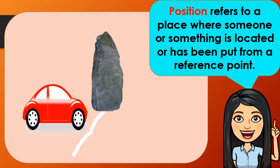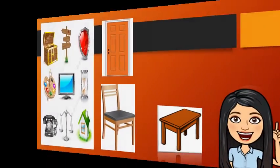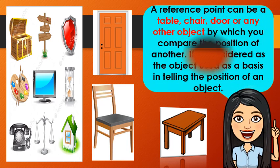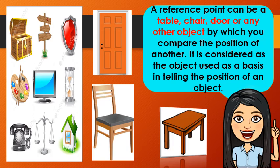You have learned in our previous lesson that position refers to a place where someone or something is located or has been put from a reference point. Do you still remember what a reference point is? A reference point can be a table, chair, door, or any other object by which you compare the position of another. It is considered as the object used as a basis in telling the position of an object.